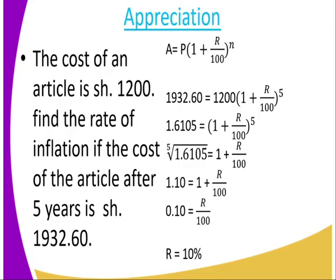After solving, we get 1.10 equals 1 plus R divided by 100. So 0.10 equals R divided by 100. After multiplying by 100, we get rate equals 10%. That is how we find the rate when we have appreciation.